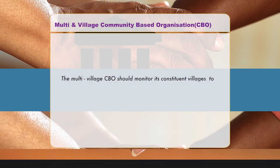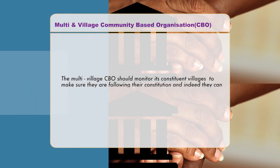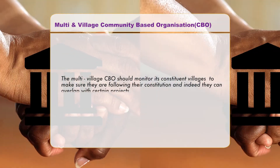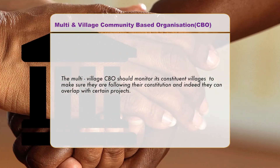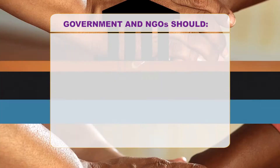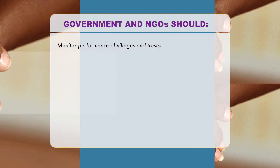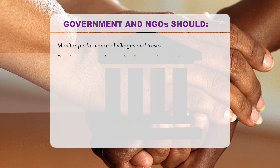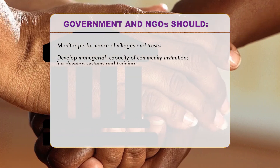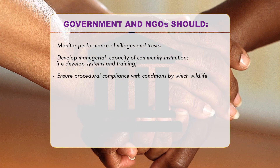The multi-village CBO should monitor its constituent villages to make sure they are following their constitution, and can indeed overlap with certain projects. Government and NGOs should monitor the performance of villages and trusts, develop the managerial capacity of community institutions — for example, design systems and provide training.